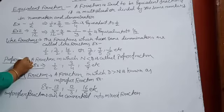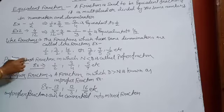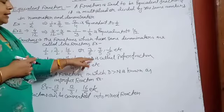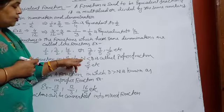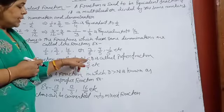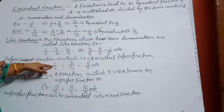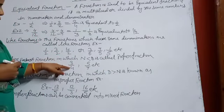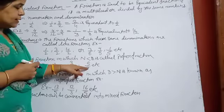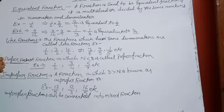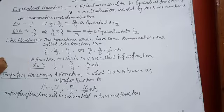Next is proper fraction. A fraction in which the numerator is smaller than the denominator is called a proper fraction. For example, 1 upon 2, 3 upon 4, 5 upon 7 — in all these, the numerator is smaller than the denominator, so these are known as proper fractions.